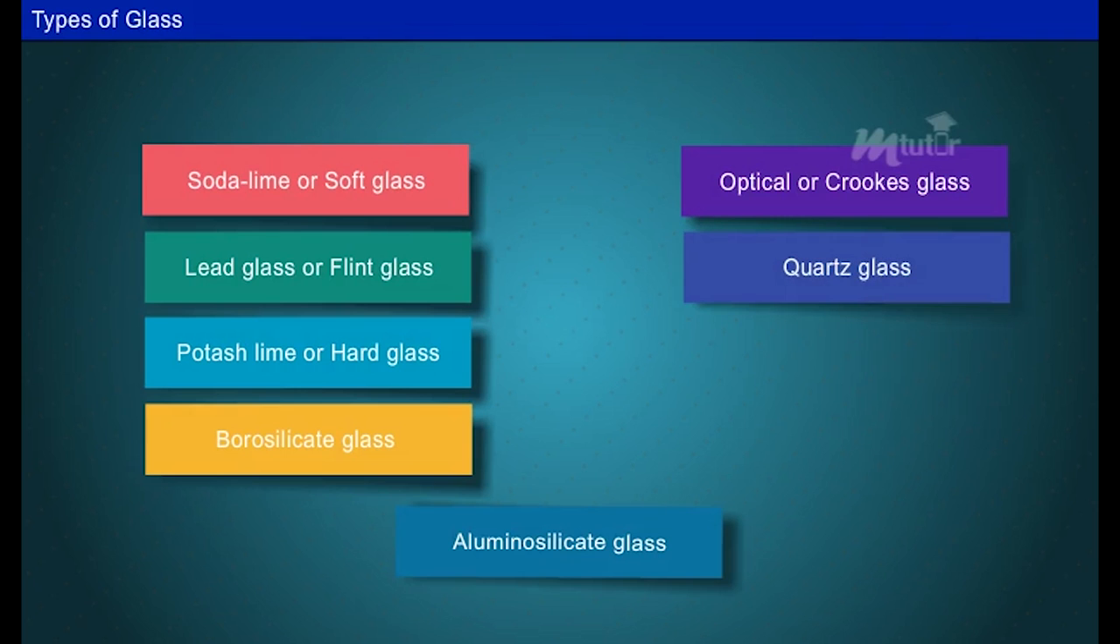Let us learn about the types of glass. There are different types of glasses: Soda lime or soft glass, Lead glass or flint glass, Potash lime or hard glass, Borosilicate glass, Aluminosilicate glass, Optical or Crookes glass, Quartz glass, Opal glass, and Glass fiber. Soda lime or soft glass: Raw materials used are silica, calcium carbonate, and soda ash. Composition of soft glass in percentage by weight: Silicon dioxide 71-73%, Sodium oxide 12-14%, and Calcium oxide 10-12%.